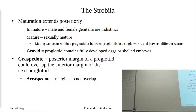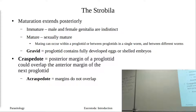Inside the strobila, maturity extends posteriorly — the youngest proglotids are closest to the scolex, and the most mature are at the very posterior end. Maturation is typically male first, then female. Male genitalia develop first before the female organs. You can have mating within a proglotid, or mating between proglotids if the worm folds in upon itself, or reproduction between two different worms.